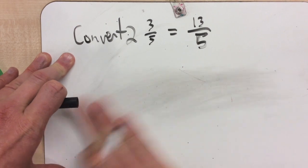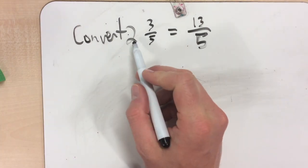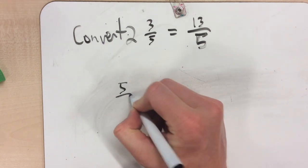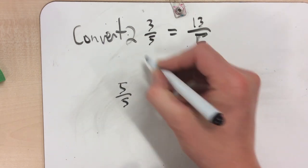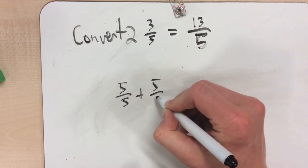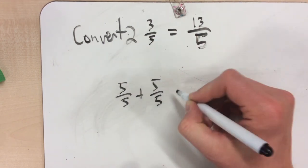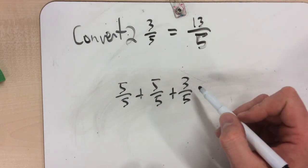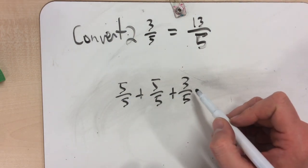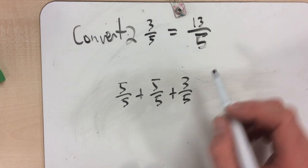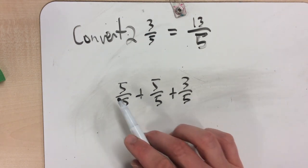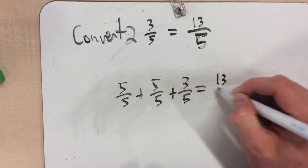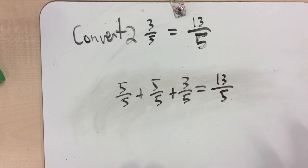So 2 and 3 fifths equals 13 fifths. Another approach: we know that every 1 is going to have 5 fifths, so we can write it as 5 fifths plus 5 fifths plus 3 fifths. That's the same as 5 plus 5 plus 3, which gives us 13 fifths.